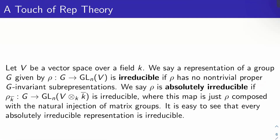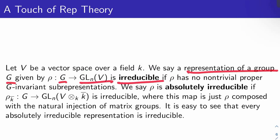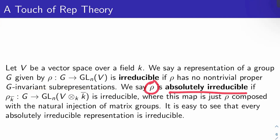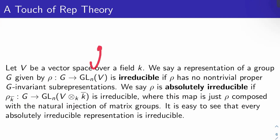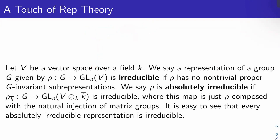A touch of representation theory before we get into our big theorem for the day. Let V be a vector space over a field K. We say a representation of a group G given by rho from G to GL_N(V) is irreducible if rho has no non-trivial proper G-invariant sub-representations. We say rho is absolutely irreducible if rho_{K-bar}, the representation given by G mapping to GL_N(V ⊗ K-bar), is irreducible. It's easy to check that if you're absolutely irreducible, you're also irreducible.